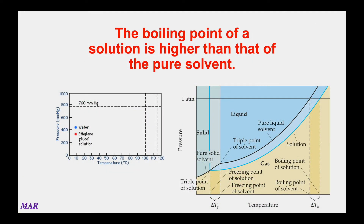At 30 degrees Celsius, pure water and a solution of ethylene glycol have nearly the same vapor pressure. As temperature increases, so do both vapor pressures. But when the vapor pressure of water reaches one atmosphere, ethylene glycol is at almost half that. Pure water boils at a significantly lower temperature than does the ethylene glycol solution, because the solute is blocking the solvent from going into the gas phase, and the vapor pressure at a given temperature is usually lower than the solvent.